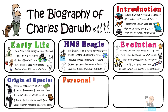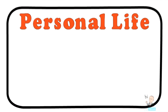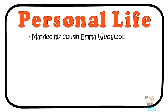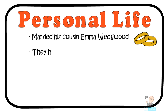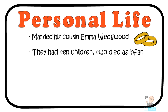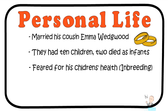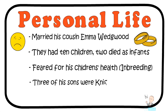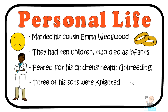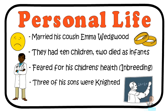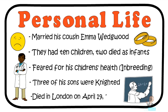Charles Darwin married his cousin Emma Wedgwood. He had fallen in love with his cousin and married her despite what others would think. Together, they had 10 children, though two died as infants. Darwin always feared for his children's health because they were inbred, and many of his children were not able to have children of their own. Other children did become very successful — three were actually knighted, and some grew up to be renowned mathematicians and distinguished medical doctors. Charles Darwin died in London on April 18th, 1882.